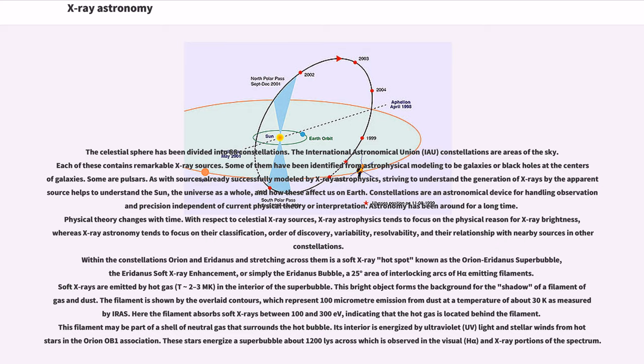Within the constellations Orion and Eridanus and stretching across them is a soft X-ray hotspot known as the Orion-Eridanus Superbubble. Soft X-rays are emitted by hot gas in the interior of the Superbubble. The filament absorbs soft X-rays between 100 and 300 electron volts, indicating that the hot gas is located behind the filament. Its interior is energized by ultraviolet light and stellar winds from hot stars in the Orion OB1 Association. These stars energize a superbubble about 1200 light years across which is observed in the visual and X-ray portions of the spectrum.